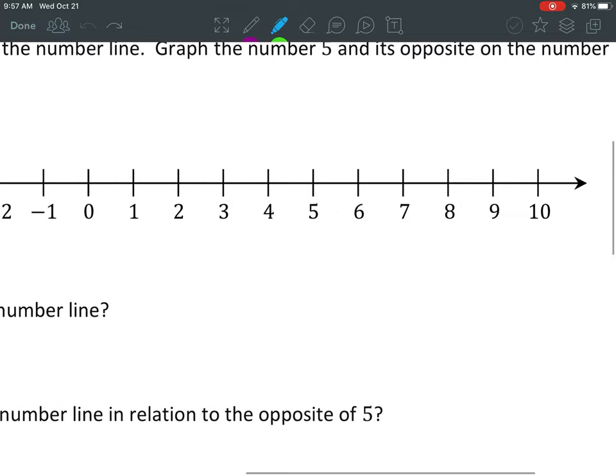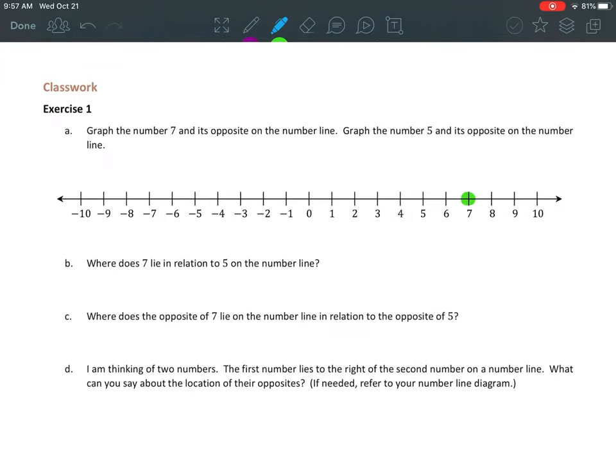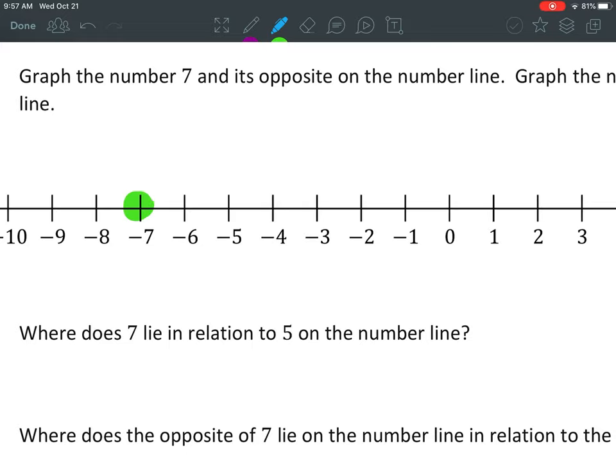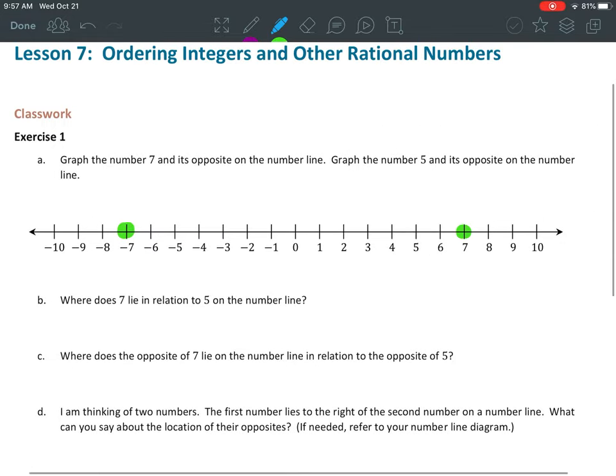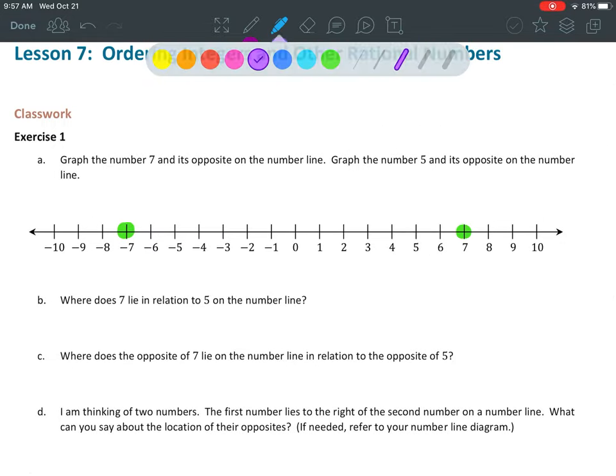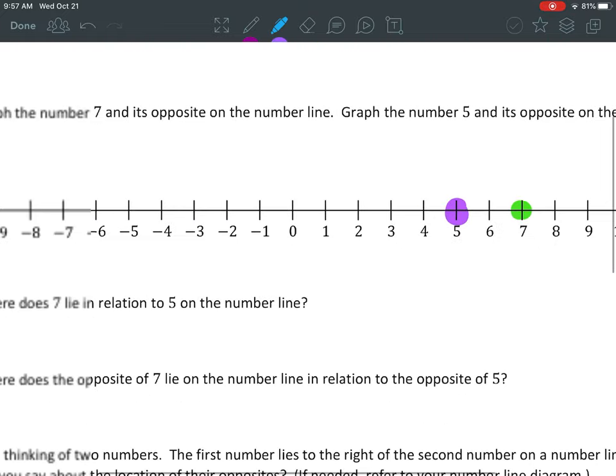Okay, so 7 and its opposite is negative 7. And then they want us to graph the number 5, so I'm going to switch colors. And the opposite of 5, which is negative 5.